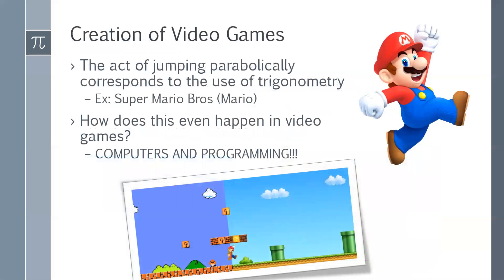Now we'll be talking about the creation of video games. The use of trigonometry is really important in game design, because without it, you'd only be able to jump vertically. Thanks to Hipparchus, we have the ability to make characters jump parabolically. One great example is the game Super Mario Bros. In Mario, you can see him effortlessly gliding over different roadblocks — he doesn't jump along the y-axis, but takes a slightly curved pathway to avoid obstacles. Mario can actually overcome these hurdles thanks to trigonometry.